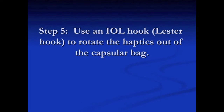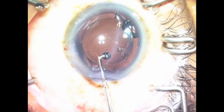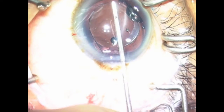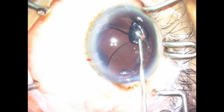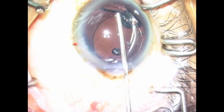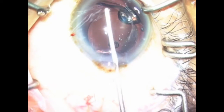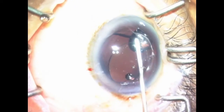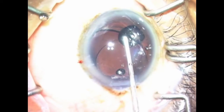Step 5. Use an intraocular lens hook, such as a Lester hook, to rotate the haptics out of the capsular bag. Step 6. If the haptic is stuck, additional viscoelastic is injected and this procedure is repeated until the haptic is freed.